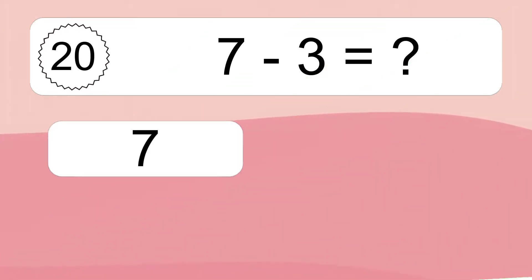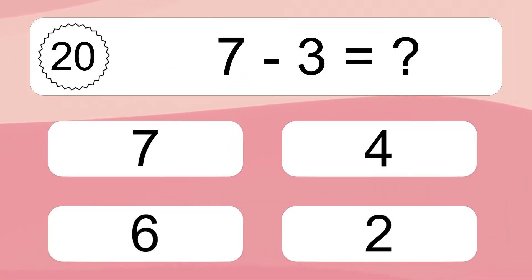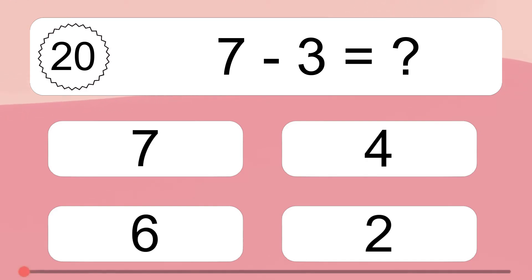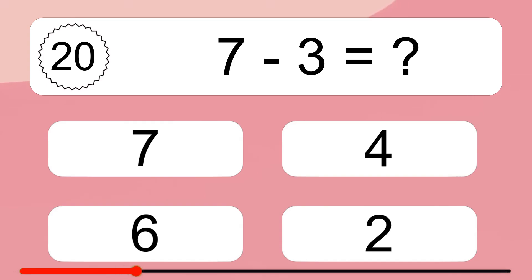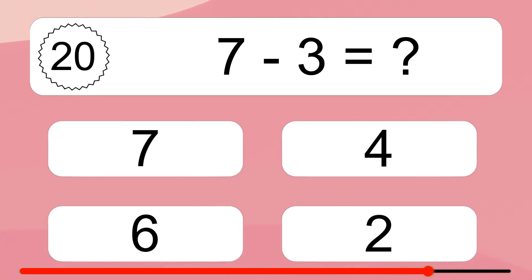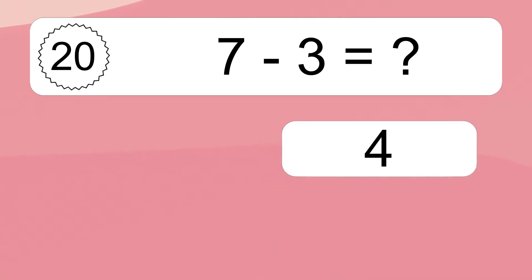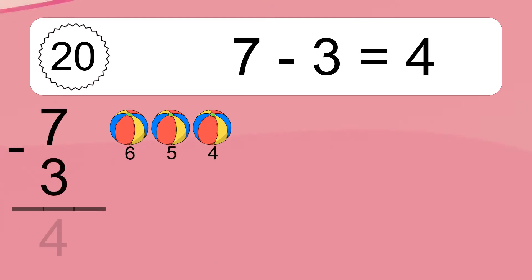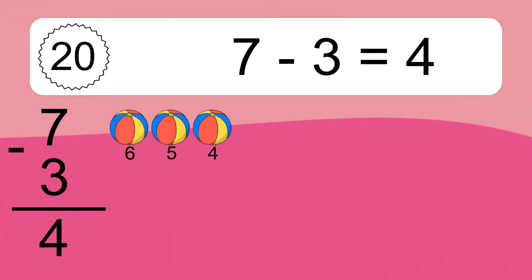7 minus 3 equals what? 7 minus 3 equals 4. Let's count it. 6, 5, 4.